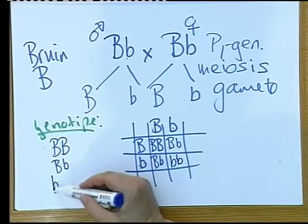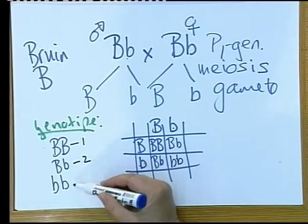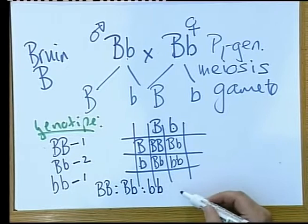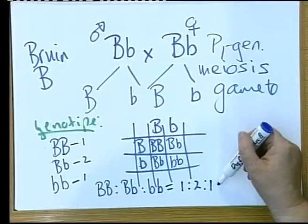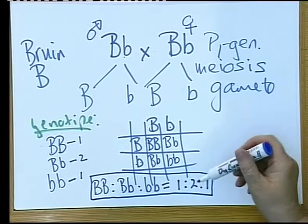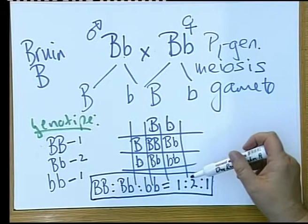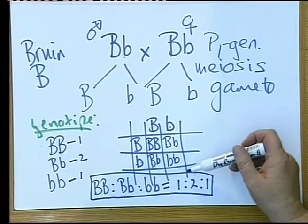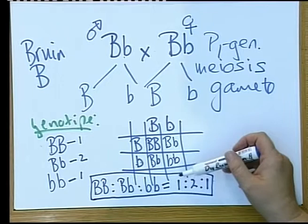Look at these two. Of this type, you've got one. Two. One. Your ratio, therefore, is BB is to capital B small b is to small b small b as 1 is to 2 is to 1. And what is important, you're pointing out now the genotype. Many learners lost marks because they didn't know how to write a ratio. This is the proper way to write down a ratio. It is 'to' this, 'is to' that. You must learn this way of writing.